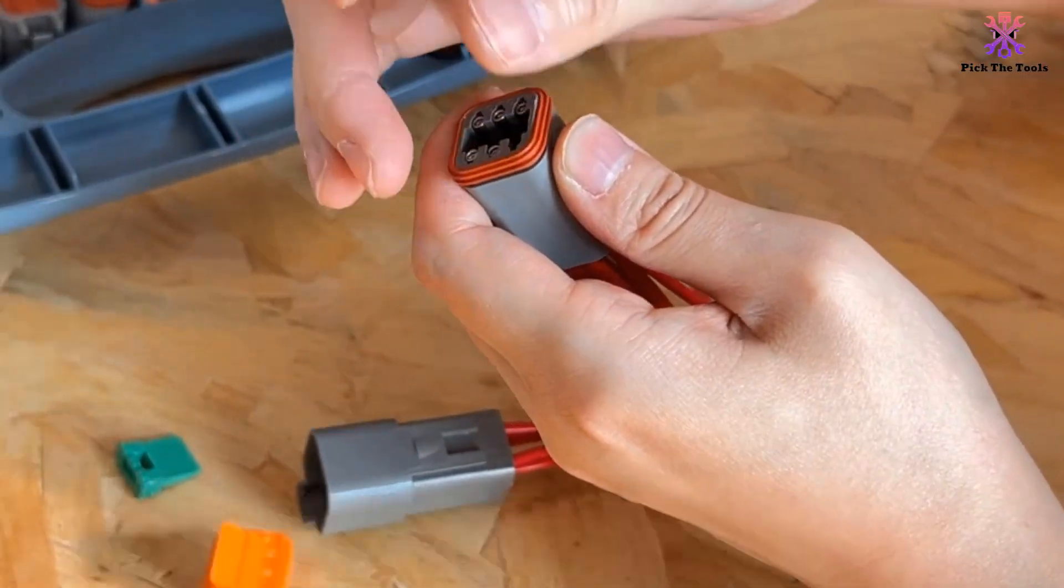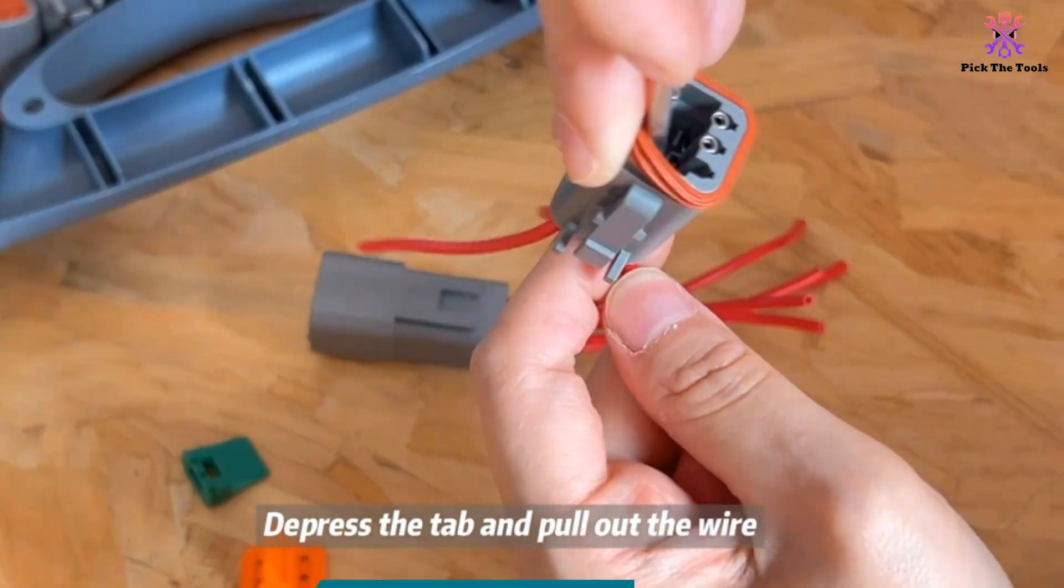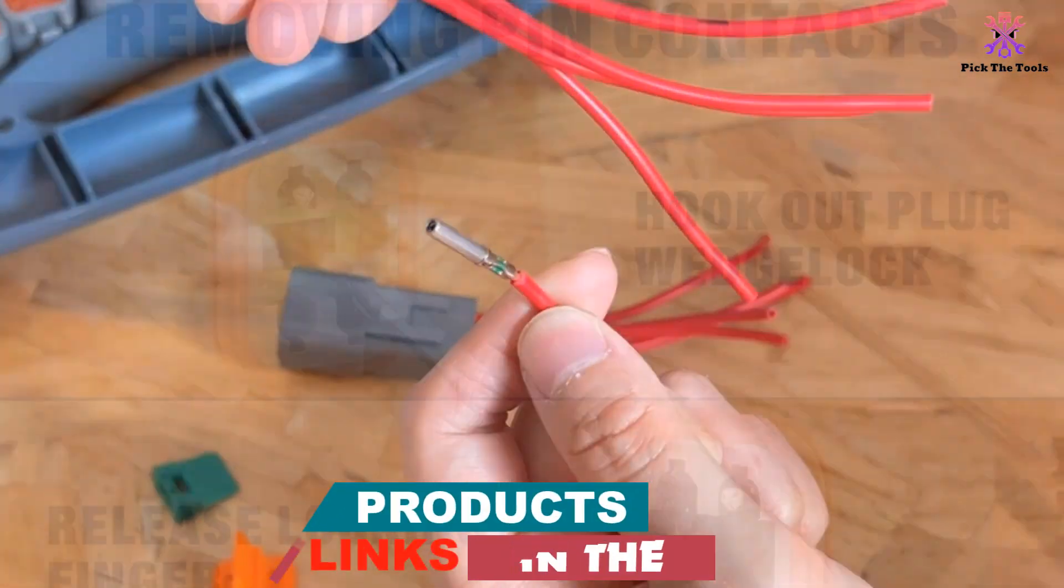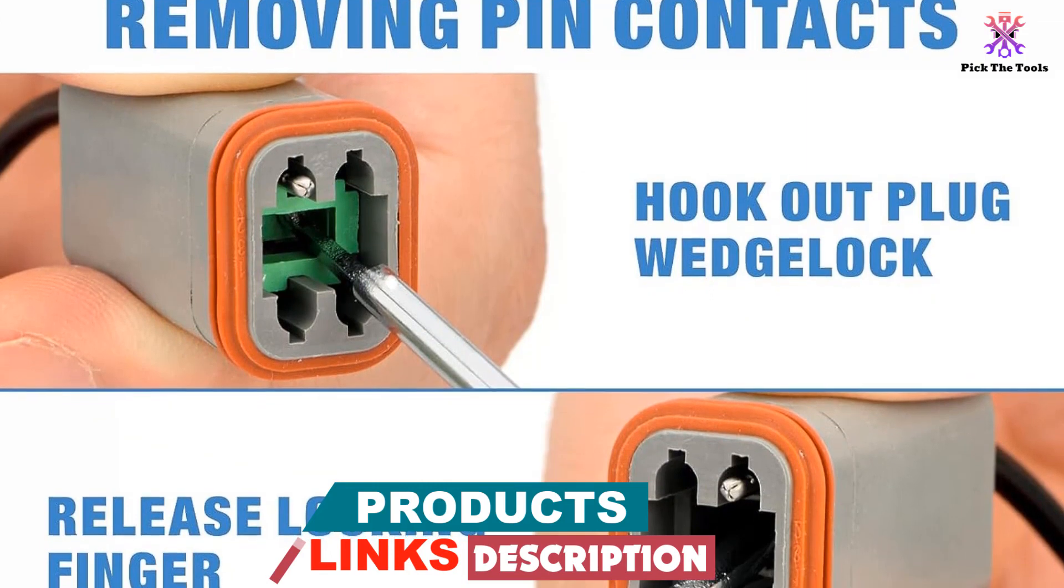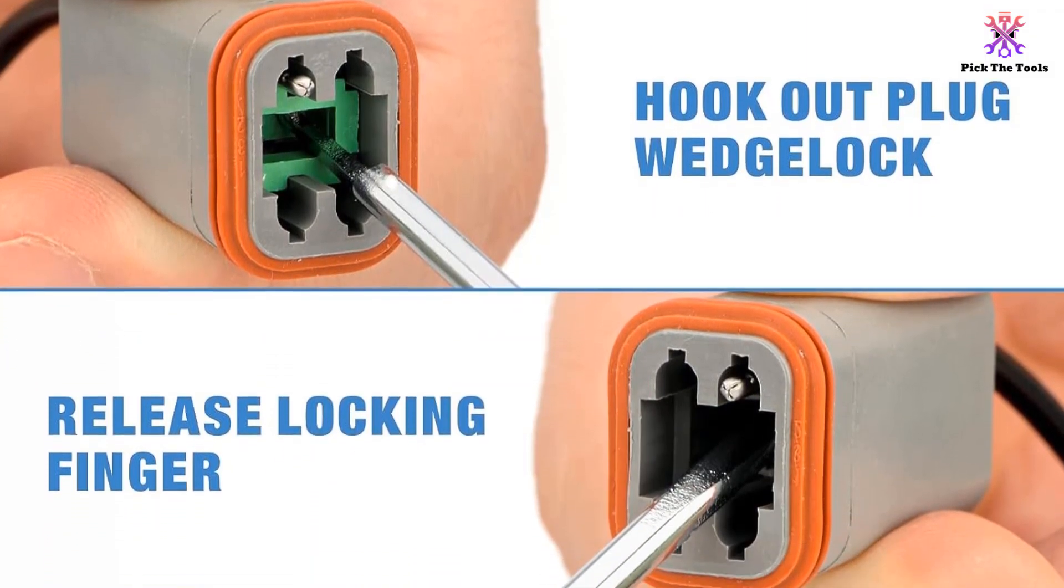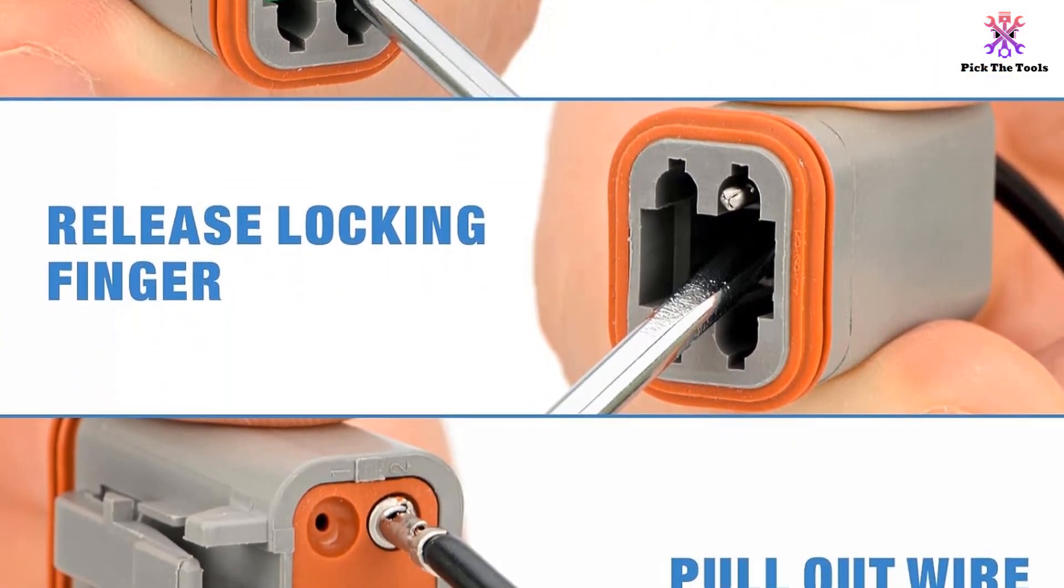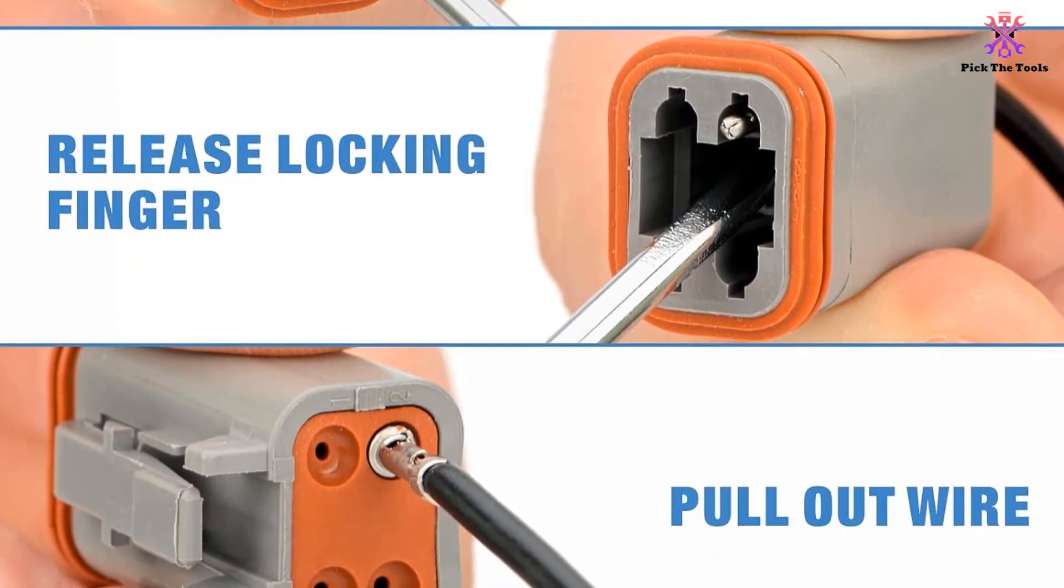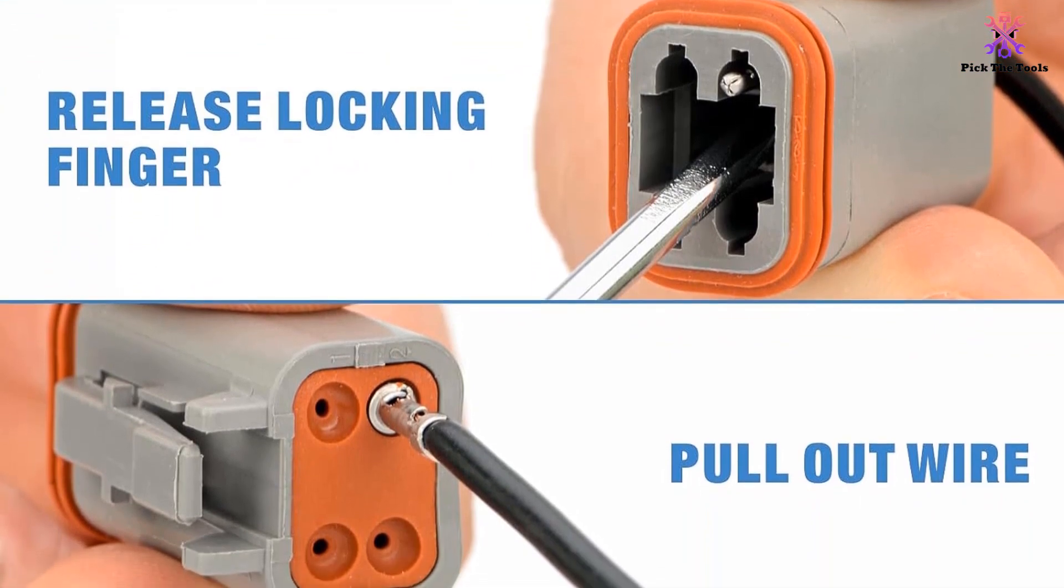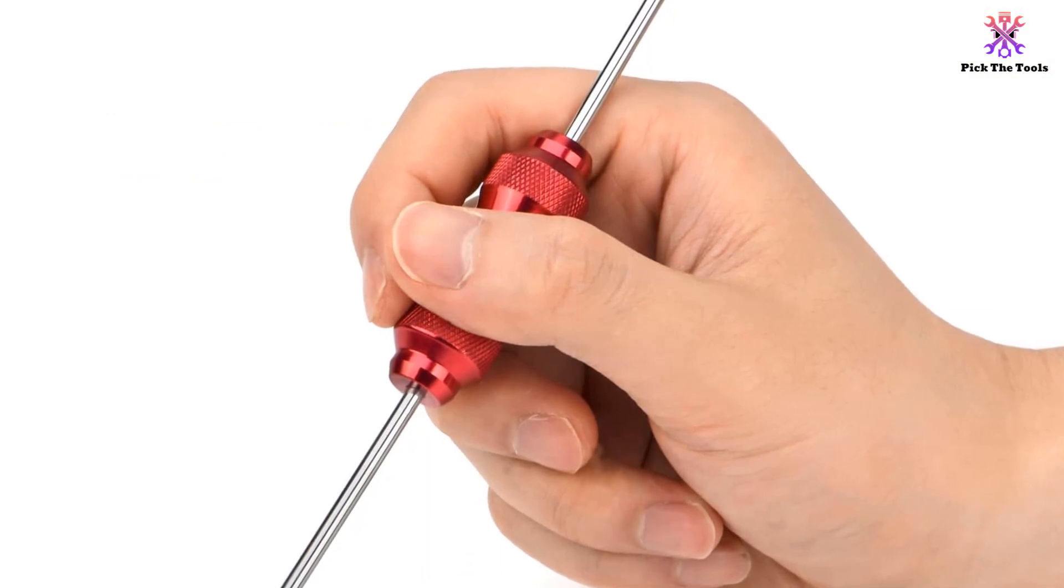With a small hook on one end, these tools effortlessly remove the wedge lock, while the small screwdriver on the other end pushes back the locking fingers and releases the contact. Made from hardened and rust-proof stainless steel, these tools ensure durability and reliability. The ET-01 tools are perfect for replacing or repairing worn electrical connections, allowing you to separate the wires from their terminals without causing any damage.